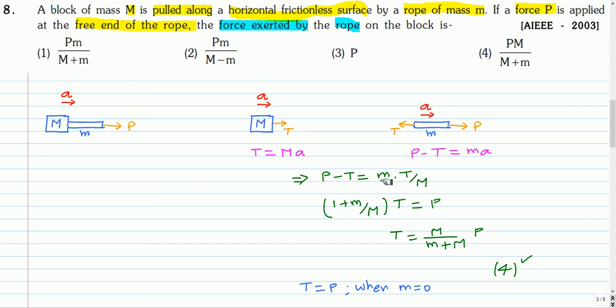So from this we get P minus T as, and the acceleration we can get from here, as tension by M. So from this we get the tension as M divided by (M plus m) into P. So the correct option is option 4.